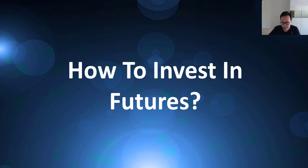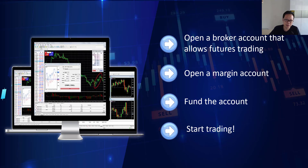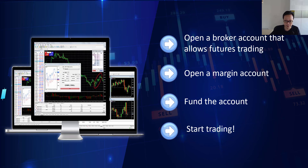We have come to the last question: how to invest in futures? This is very straightforward — it is pretty much the same as how you would do it for stocks. First, find a broker with access to the futures market you want to trade. Next, open a margin account with the broker — for futures you need a margin account, you cannot use a cash account. Then fund the account and you can start trading.